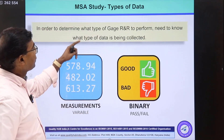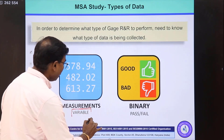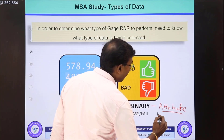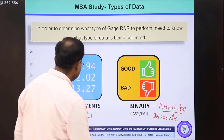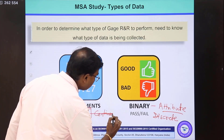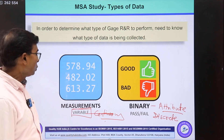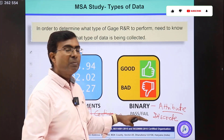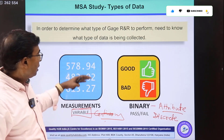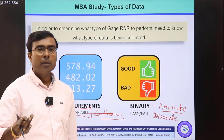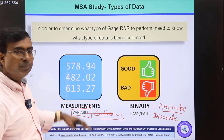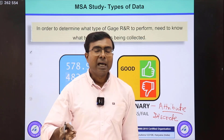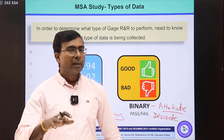Coming back to MSA content — we have two types of data. The first is variable, also called continuous data. The second is attribute, also called discrete data. Based on the type of data, we need to perform the corresponding MSA study. For variable data, we conduct variable MSA or variable Gauge R&R study. For attribute data, we conduct attribute agreement analysis. Instruments like vernier caliper, micrometer, bore dial, and height gauge fall under the variable category. For attribute study, gauges like snap gauges, radius gauges, or visual inspection use attribute agreement analysis.